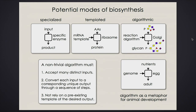The Golgi doesn't have a copy of the final product to copy. Unlike a mold where you pour plaster to make a statue — all the information is in the mold — here there is no mold. It's more like making a cake from a recipe: you have a series of steps, a bunch of inputs, and you hope you make the final product. The question is how are these sugars 'cooked' by the Golgi apparatus to make the final product.